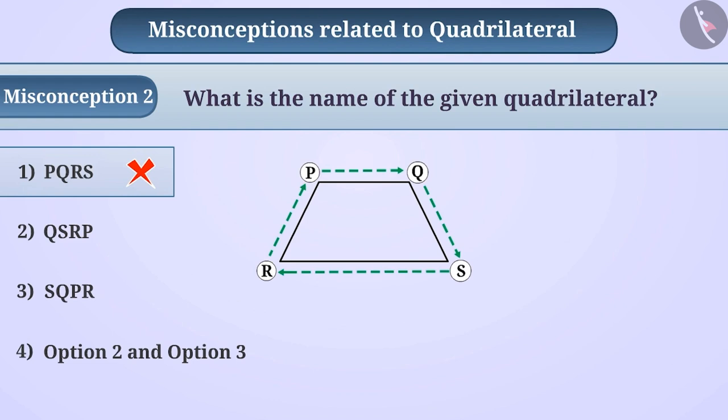In this way, a quadrilateral can be named as both QSRP or SQPR.